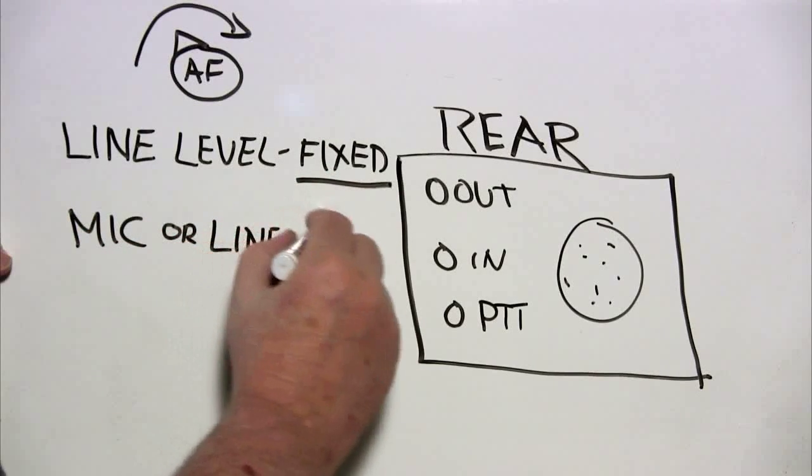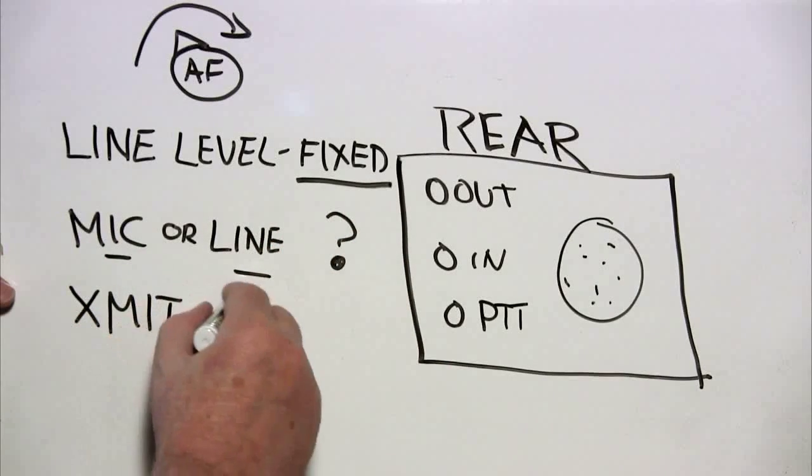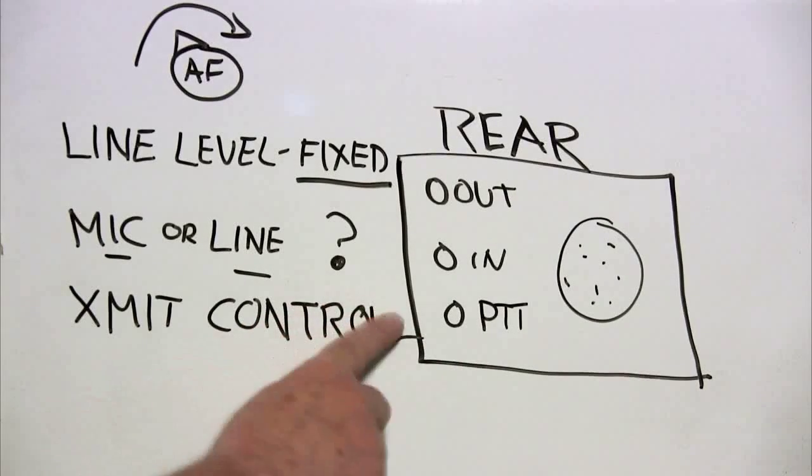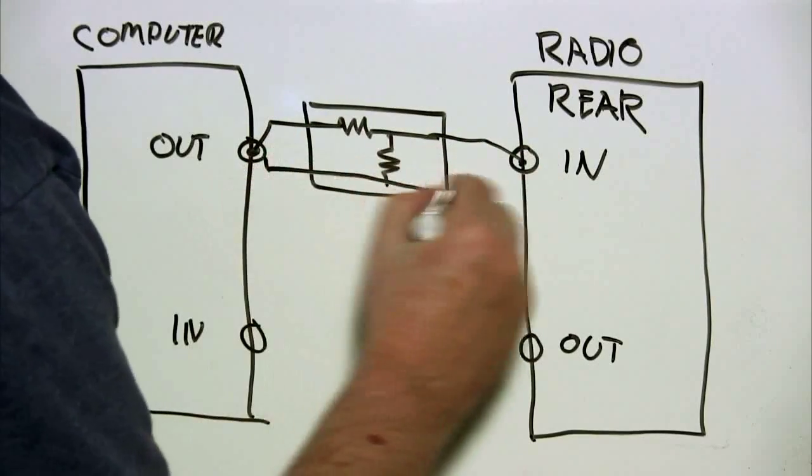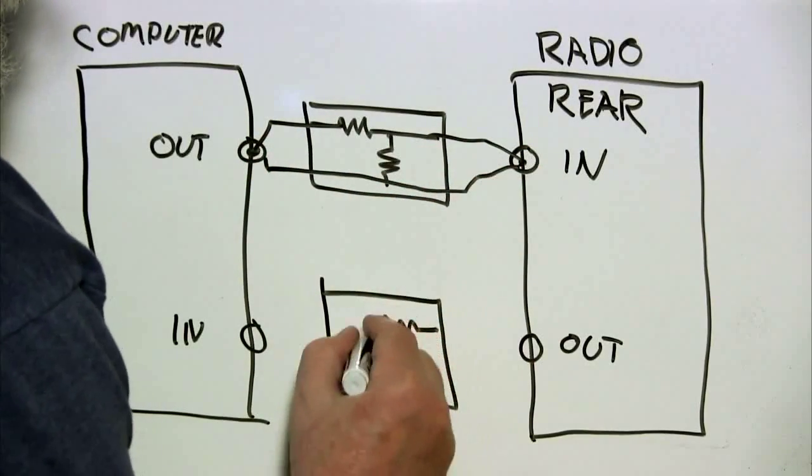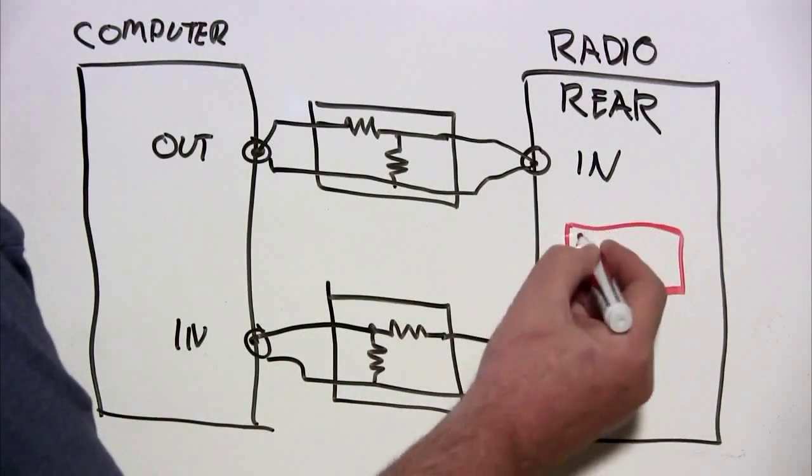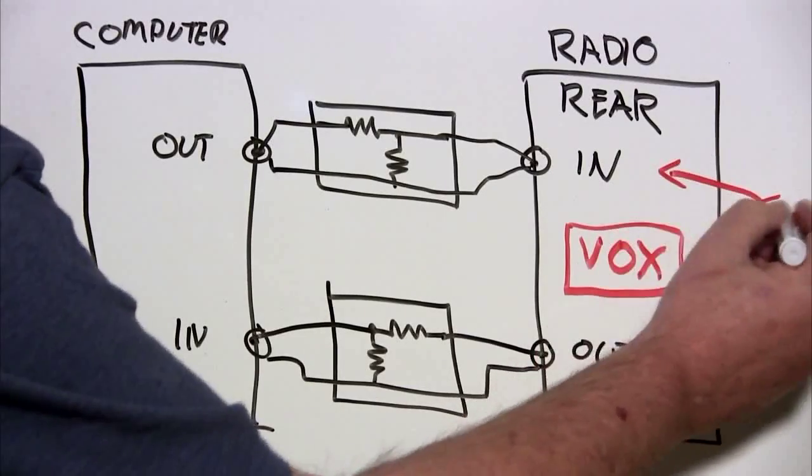Audio input on the rear of the radio may be mic level, which is low, or line level, which is high. You'll have to check your manual to see what you have. And there's also a connector for a push to talk signal. So you can use the interfaces that I've shown connecting to the headphone and microphone jacks to the jacks on the rear of the radio. But something to watch out for is that not all radios will allow Vox to be used with audio input on the rear of the radio.